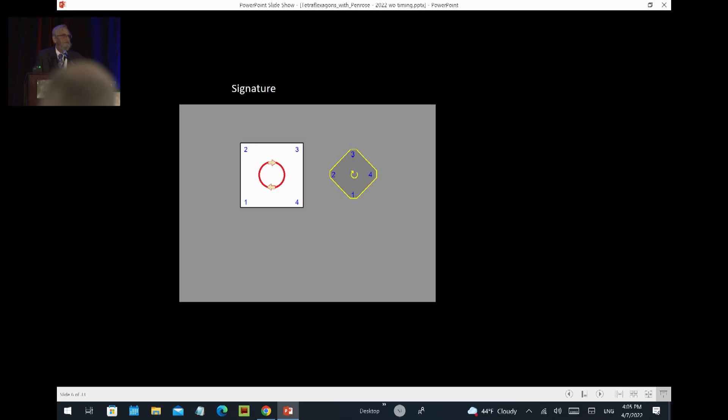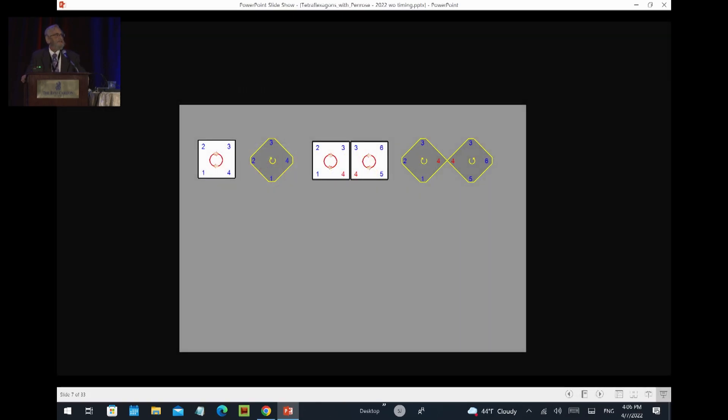So I come up with my beginning description of tetraflexagons. The basic tetraflexagon has four faces, shows in cycles one, two, three, four, goes around in circles.